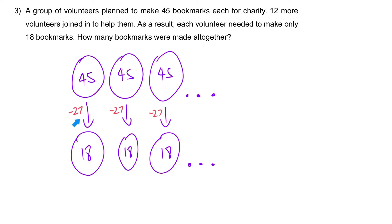Think about it: if they want to maintain the same fixed number of bookmarks in total, and each of them now has a 27 reduction, this 27 someone has to make — who are the ones that are going to create this 27? Well, this 27 has to be passed on as extra work to the 12 new volunteers.